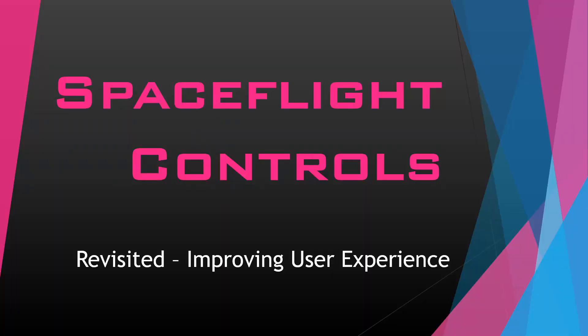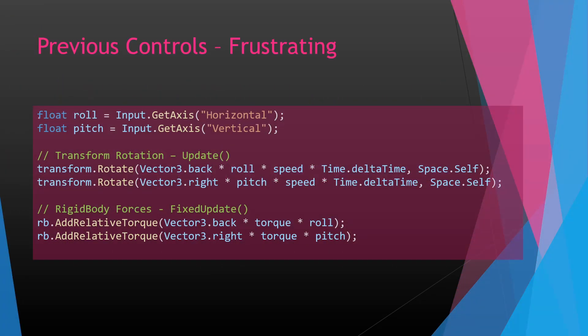One of the biggest reasons I wanted to change the input system was because the old system was very limited. You either had roll or pitch, and you didn't have yaw, so it was really difficult to get directly to the location you were wanting to aim at. Eventually you could, but you'd have to do a few steps to get there. Let's go into the code itself that we had before.